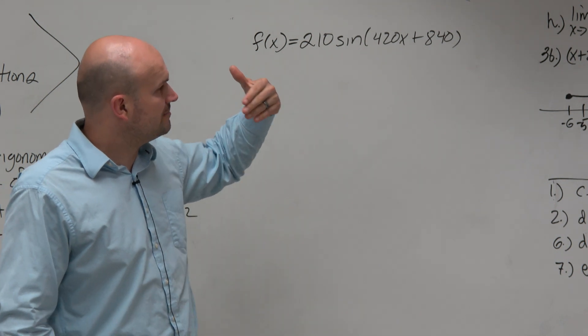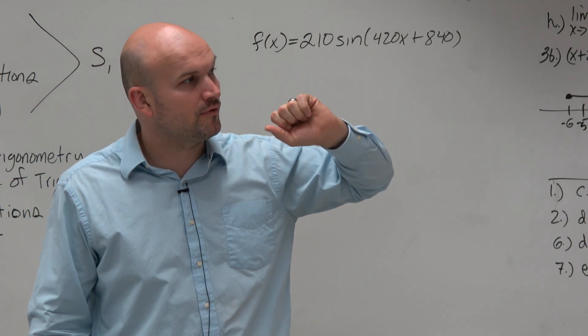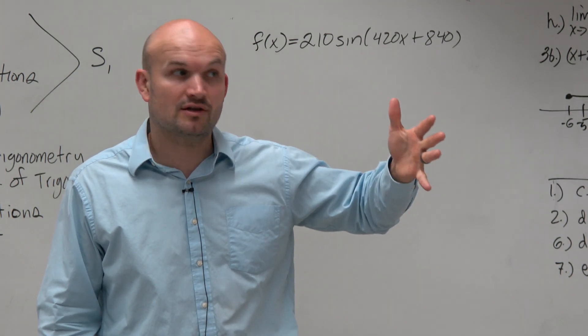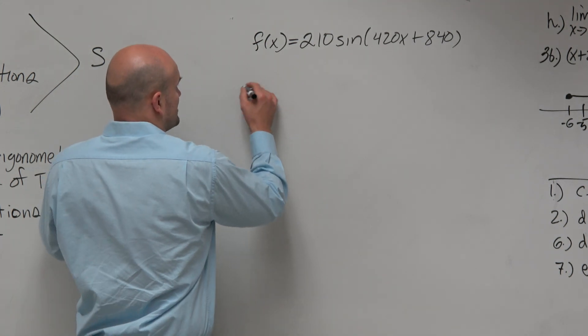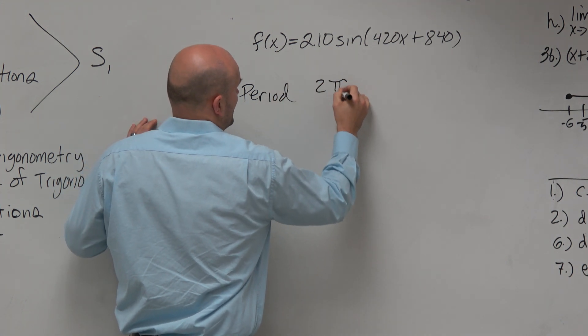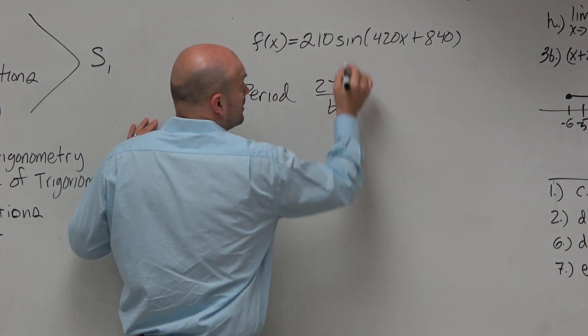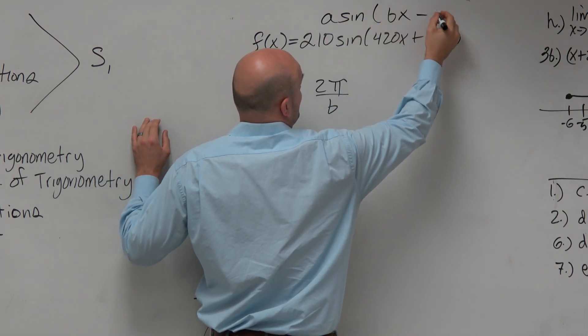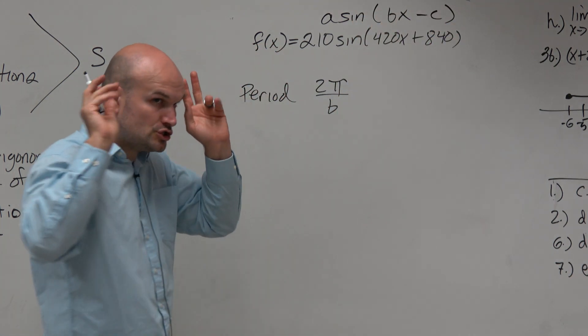We're going to want to remember the definition for period for sine, cosine, cosecant, and secant, because they're all the same. The period is simply 2π divided by b, where it's a times sine of bx minus c. If you remember, that was our general formula.